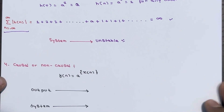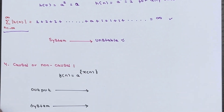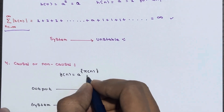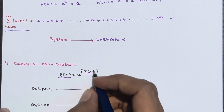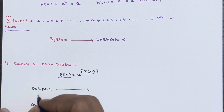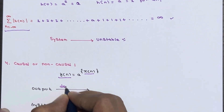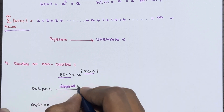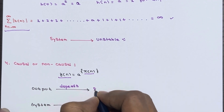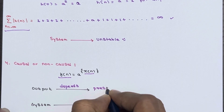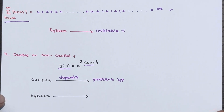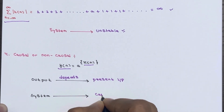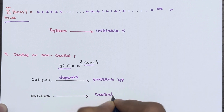Now let's check whether the system is causal or non-causal. Here x(n) is the present input and y(n) is the present output. The output depends only on the present input. If the output depends only on the present input, then the system is a causal system.